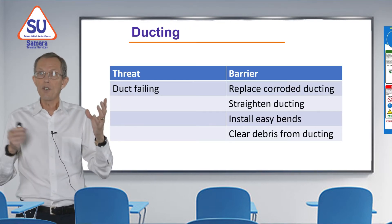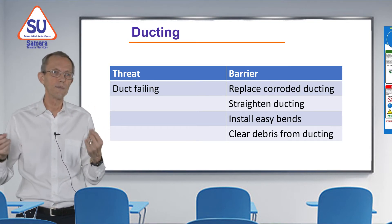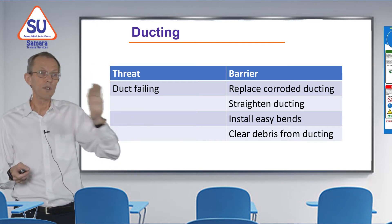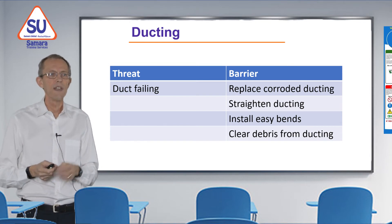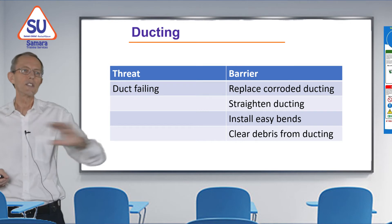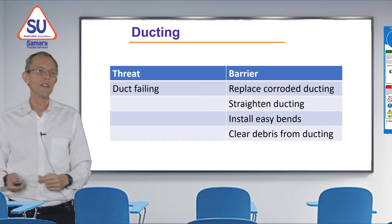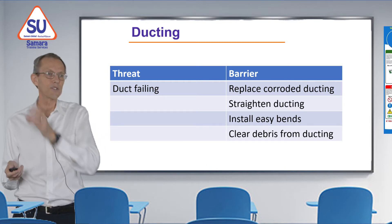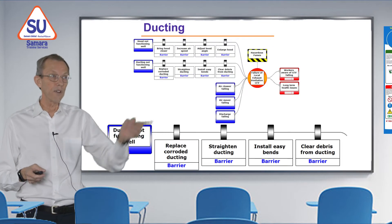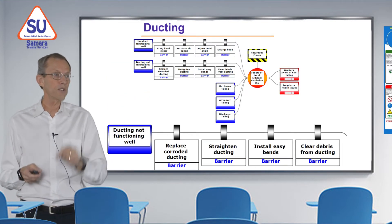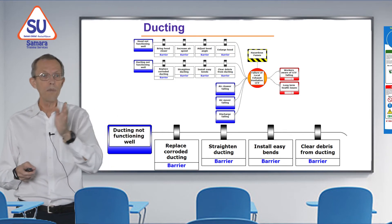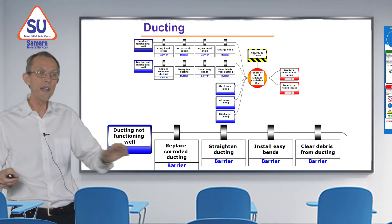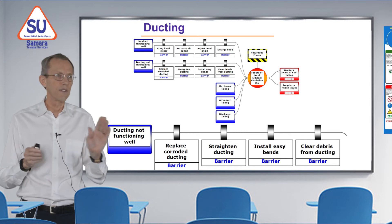Moving on to ducting: if the ducting fails, it could be because it's corroded — we could replace it. It could fail because there are too many bends, making it difficult to pull air flows through; so we could straighten the ducting or replace sharp bends with gentle, easy bends. Lastly, we can clean out accumulated debris — dust or anything else in the ducting. On the diagram, the second threat line shows: ducting not functioning well, and four barriers — replace corroded ducting, straighten the ducting, make smooth easy bends, and clear the debris.